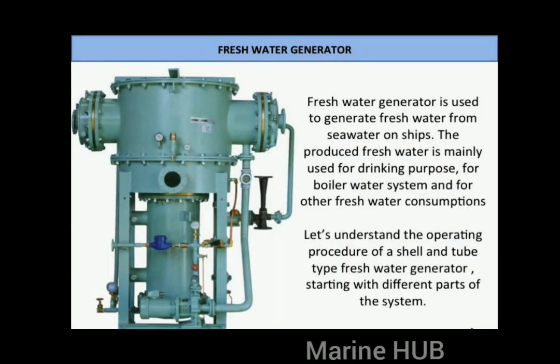A fresh water generator is used to convert seawater into fresh water on ships. The produced fresh water is mainly used for drinking purposes, for the boiler water system, and for other fresh water consumptions. Let's understand the operating procedure of a shell and tube type fresh water generator.